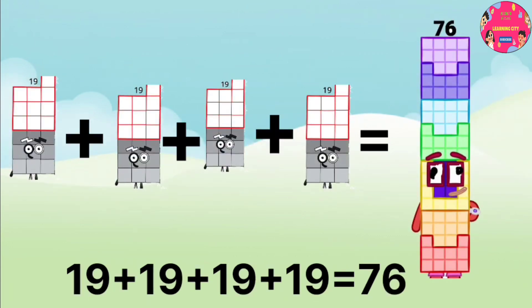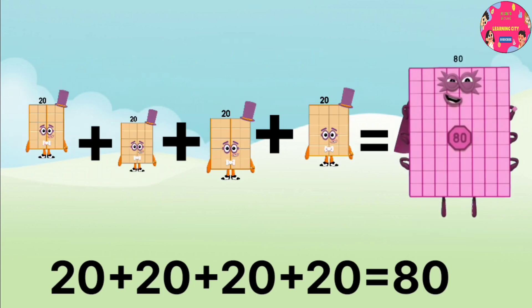19 plus 19 plus 19 plus 19 equals 76. 20 plus 20 plus 20 plus 20 equals 80.